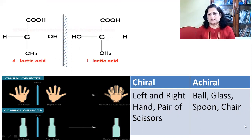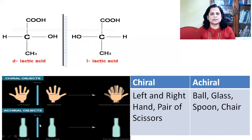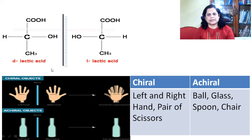Some objects are chiral in nature and some are achiral. Our left and right hands, a pair of scissors, and a pair of shoes are examples of chiral objects — they are non-superimposable mirror images of each other. Examples of achiral objects include a ball, glass, spoon, and chair. For instance, a bottle and its mirror image, when placed on each other, give the same image — they are superimposable. That makes them achiral objects. Each and every chiral object shows non-superimposable mirror images.